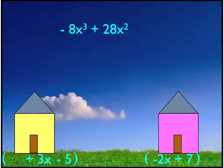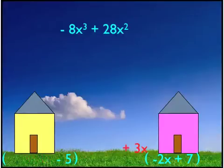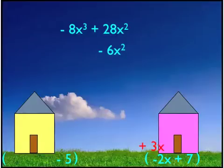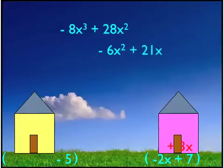Next is 3x. The 3x needs to distribute to every term in the second polynomial. So 3x times negative 2x is negative 6x squared. Then distribute to the 7: 3x times 7 is 21x. And then 3x is done.